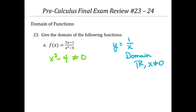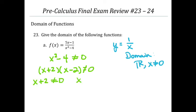We just need to solve for x. I have x squared minus 4, so I'm going to factor. Since this is a quadratic, we need to factor to solve. If I factor x squared minus 4, that's going to be x plus 2 times x minus 2. This cannot equal 0, which means x plus 2 cannot equal 0, x minus 2 cannot equal 0, and x cannot equal negative 2, x cannot equal positive 2.